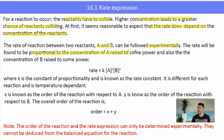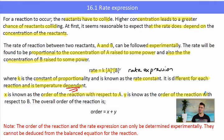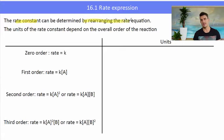For the reaction between two reactants A and B, the rate can be followed experimentally, and the rate will be proportional to the concentration of A raised to some power and the concentration of B raised to some power. So we get the rate expression: rate equals k[A]^x[B]^y. k is known as the rate constant — it's different for each reaction and is temperature dependent. x and y are the orders of the reaction with respect to each reactant, and the overall order is x plus y.